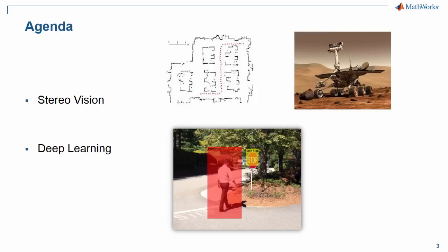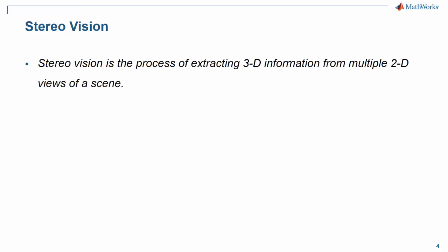So let's focus our agenda on these two topics: 3D or stereo vision and deep learning. Let's start with stereo vision. What is stereo vision? Stereo vision is the process of extracting 3D information from multiple 2D views of a scene. I've got two cameras with me which are trying to get multiple views of a scene — I'll be showing you that in a minute.